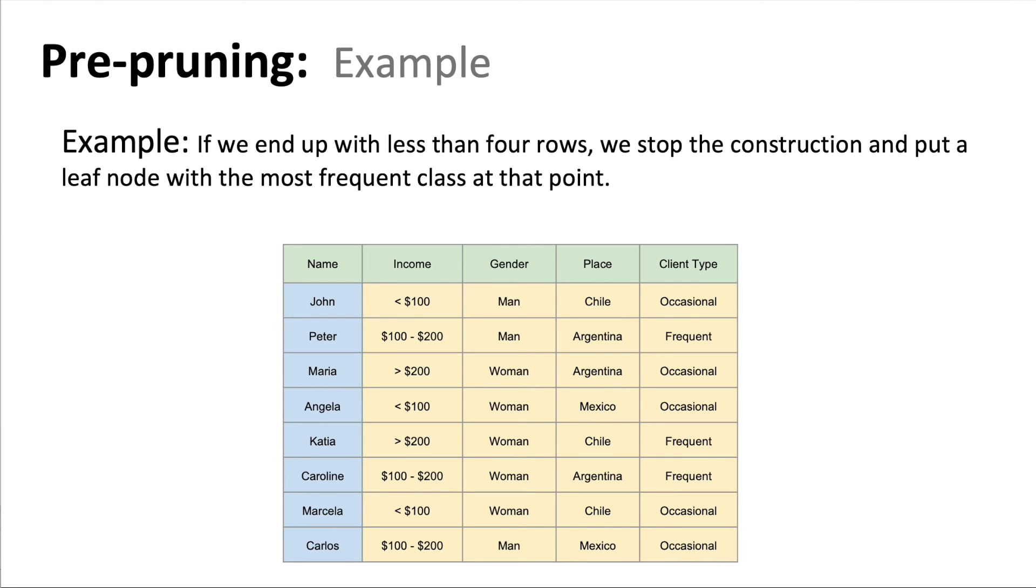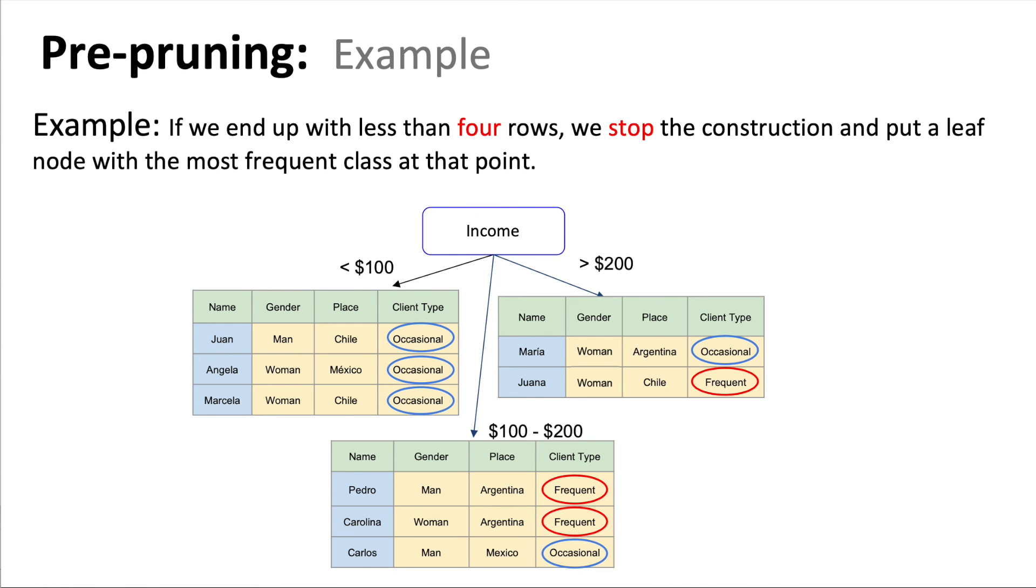In the pre-pruning case, as an example, imagine we have this training set. And again, at some point, we reach a node where when we split in the three possible edges, we see these three tables. And let's imagine that our criterion is to stop the construction when we have less than four rows.